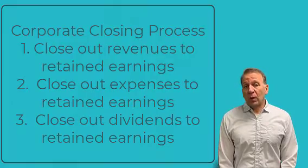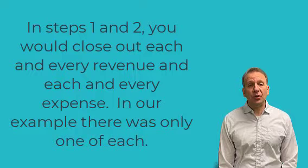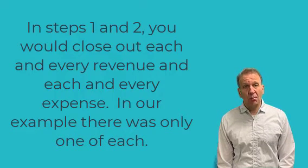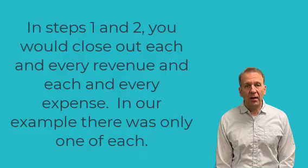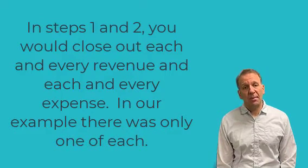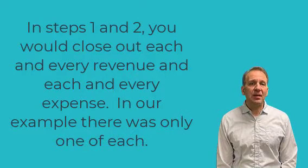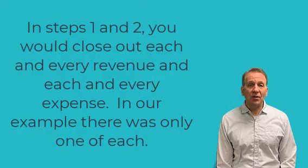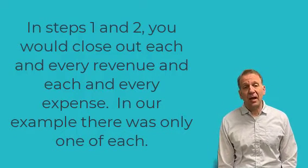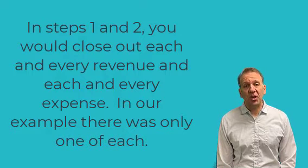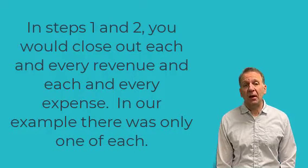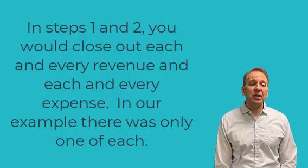One more thing to point out: in steps one and two, we just closed out one revenue and one expense. In most businesses, you're going to have multiple revenues and multiple expenses. In step one, when you close out revenues, you would close out all of the revenue accounts. Revenues have credit balances, so you would debit every revenue account — consulting revenue, sales revenue, interest revenue, any revenue account. And the same thing for expenses: they have debit balances, so you would credit utilities expense, wage expense, rent expense, every single expense to zero it out. The sum of all those would be the amount of your entry into the income summary.